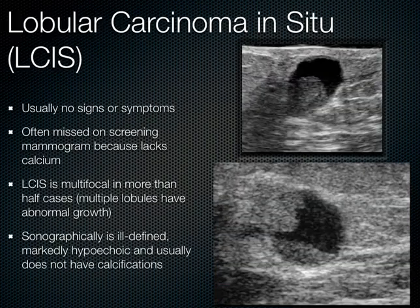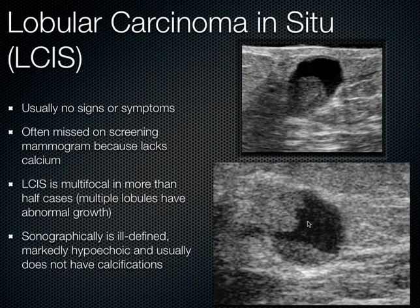Lobular carcinoma in situ usually has no symptoms and is often missed on a screening mammogram because there's no calcium in these lesions. It is multifocal in more than half the cases, and you see multiple lobules with abnormal growth patterns. Sonographically, you get an ill-defined hypoechoic appearance, again with no calcifications.